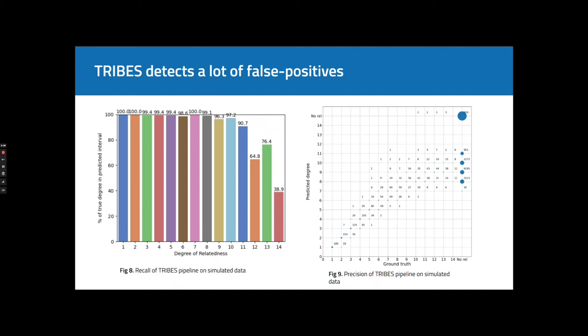It requires phased data because it uses germline and it does not allow easy control over false positive rate. And on the left, you can see that recall is very high even for distant degrees, but there are a huge number of false positives for these distant degrees.